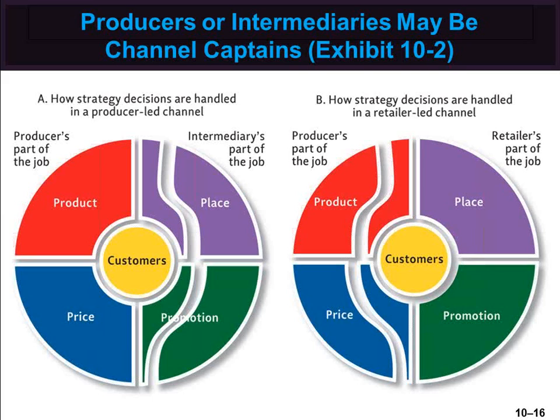In a producer-led channel, the producer develops the product and price structure but relies mainly on intermediaries to help with distribution and promotion. Wholesalers or retailers might also be channel captains because of their size or proximity to consumers. In this case, the intermediary takes on all of the place and promotion functions and part of the pricing and product functions. A retailer or wholesaler might get involved with product and pricing by developing dealer brands. Large retailers buy in such large volume from producers that they often bypass wholesalers and deal with producers directly, also securing volume discounts.